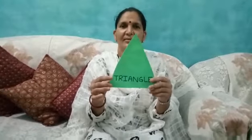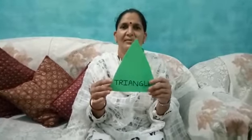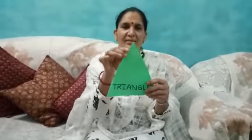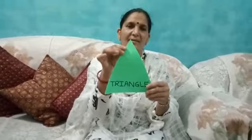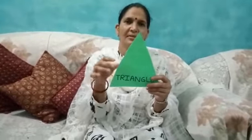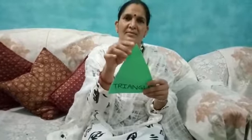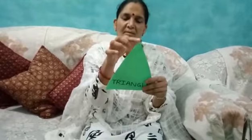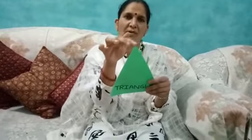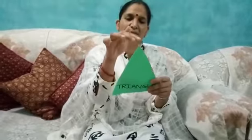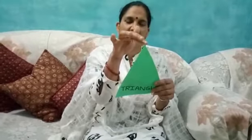See, this is a triangle. Which color? Green. Green color. It has three corners. Count with me. One, two, three.